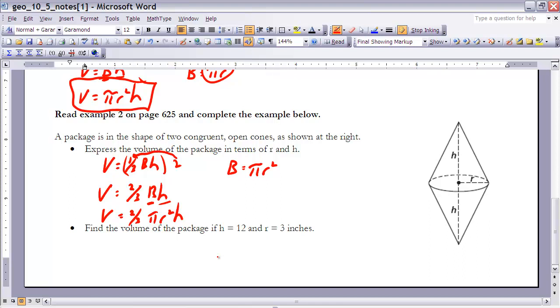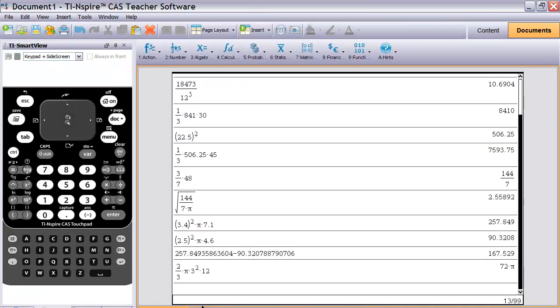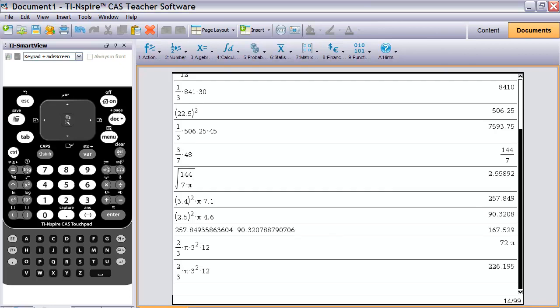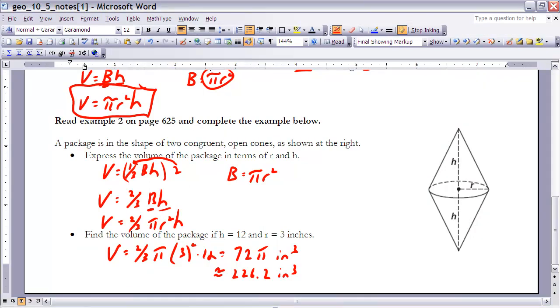And then the second part to that says find the volume of the package if h is 12 and r is 3. So now I'm going to plug that information in here. So volume is equal to two-thirds times pi times 3 squared times, well, it says h is 12, so times 12. And then I'm going to go to my calculator to plug that in, which would be 72 pi. Now if you want to get an exact answer, make sure that instead of writing in like 0.6 or 0.6 repeating, put in the fraction two-thirds as you're multiplying that out. So you should get 72 pi as an exact answer. And if I hit Ctrl-Enter on that, it gives me an approximation of about 226.2. So here's my two possible answers, 72 pi cubic units or 226.2 cubic inches as well.